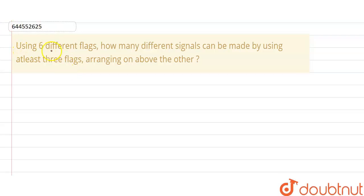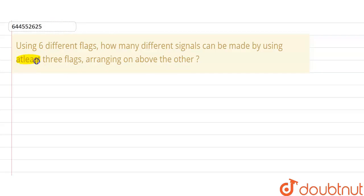Hello friends. Here we have a question: using six different flags, how many different signals can be made by using at least three flags arranged one above the other? That means we have to select at least three, that is three or more flags at a time.